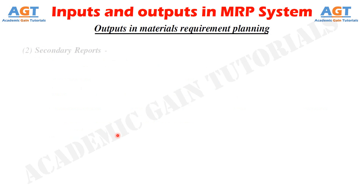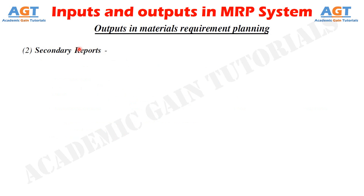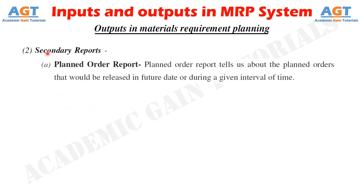Output number two is secondary reports — additional optional reports under the MRP system, falling into three categories. Category A is the Planned Order Report, which tells us about planned orders that would be released at a future date or during a given interval of time. This report helps in preparing the funds required for payments to suppliers in the future, according to the dates and order sizes.